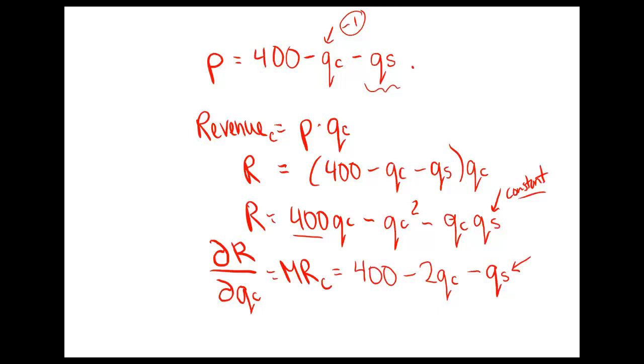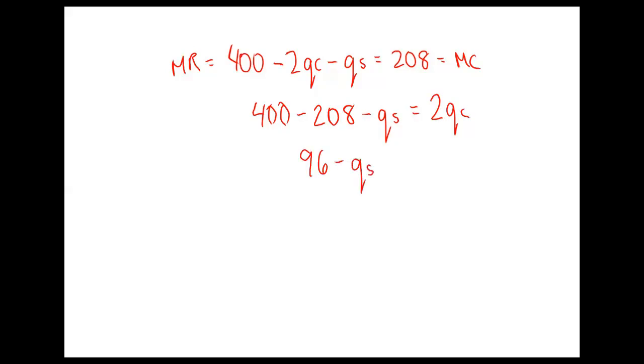We want to set that expression equal to marginal cost. So we have 400 minus 2QC minus QS, and we're going to set that equal to our marginal cost of 208. Now you can see that P has been eliminated from our expression, which is what we wanted. We're going to solve for QC because that's the quantity we're going to set as Canada Air. We'll bring everything over, so 400 minus 208 minus QS equals 2QC.